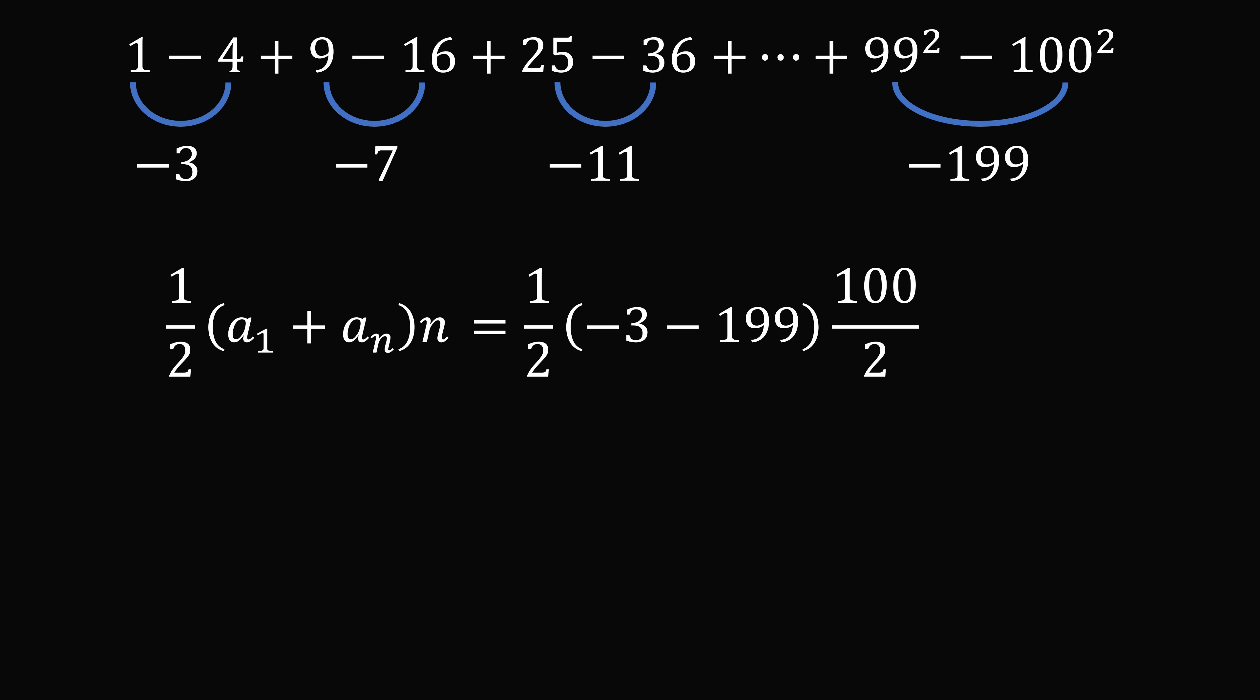So substituting in, we have 1 half multiplied by negative 3 minus 199 multiplied by 100 over 2. This is equal to minus 101 multiplied by 50, which is equal to minus 5050. And that's the answer.